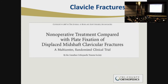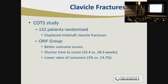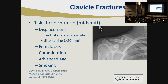This paradigm shifted in 2007 with a publication from the Canadian Orthopedic Trauma Society, which was a randomized trial of non-operative versus operative treatment of mid-shaft clavicles — specifically closed displaced mid-shaft fractures. They randomized 132 patients and found better outcome scores in the operatively treated group, a shorter time to fracture healing, and lower rates of nonunion. This turned our thinking upside down in terms of how we approach this injury.